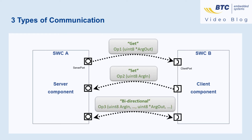The bi-directional communication enables the client to get information, process it, and set the result. In this case, the server operation would have both input and output arguments.